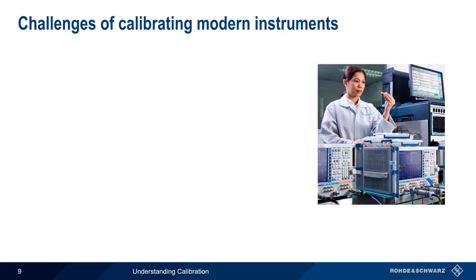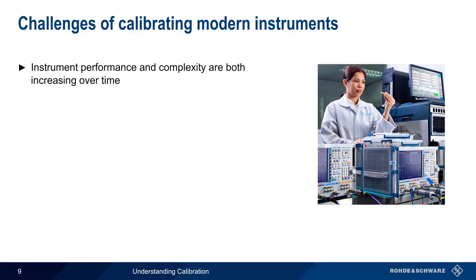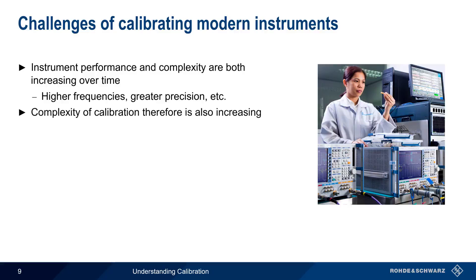Measurement uncertainty becomes even more critical when it comes to calibrating modern instruments. Over time, both the performance and the complexity of test and measurement instruments have been rapidly increasing. For example, newer technologies often operate at higher frequencies and/or require more precise modulation accuracy compared to even a decade ago. Calibrating the instruments used in developing and manufacturing these technologies has therefore also become more complex and demanding. The margin of error, or the acceptable measurement uncertainty, has become lower, and the risks and costs arising from a substandard calibration have become much higher.